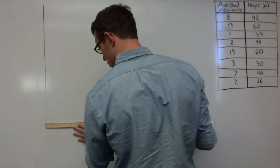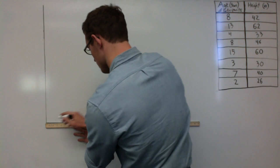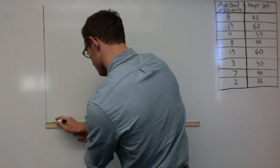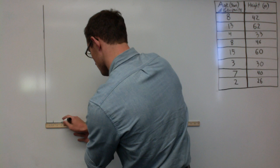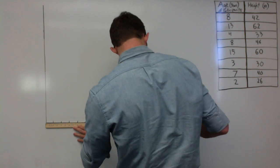On each axis, place hatch marks out from where the axes meet. It doesn't matter how many, just make sure they're evenly spaced.